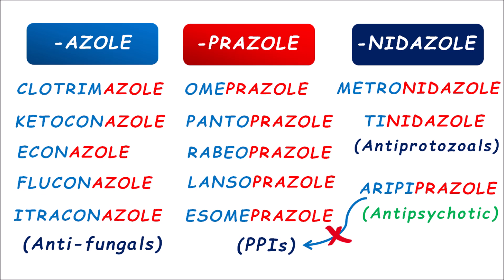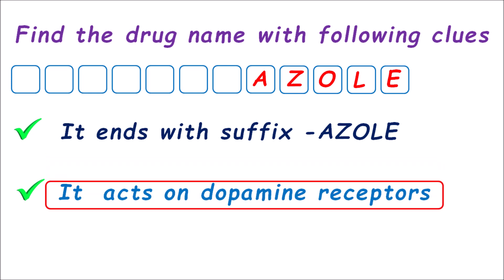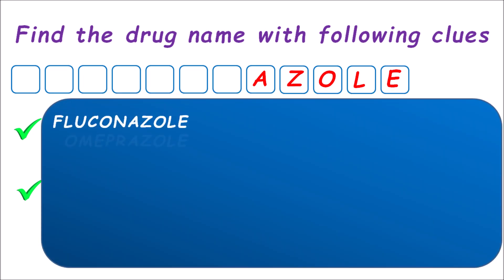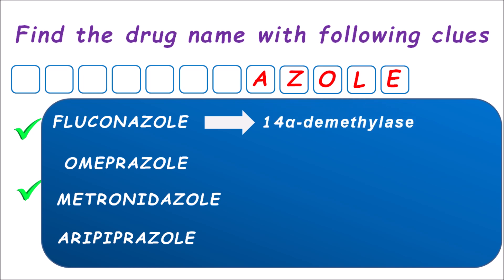Now with this information let us solve the puzzle. The second clue: it acts on dopamine receptors. Which drug acts on dopamine receptors? Among fluconazole, omeprazole, metronidazole, and aripiprazole — fluconazole is an antifungal that inhibits lanosterol-14-alpha-demethylase enzyme, thereby inhibiting ergosterol synthesis in the fungal cell membrane. So azole antifungals act on an enzyme, not on the dopamine receptor. Omeprazole and PPIs block the H+/K+ ATPase proton pump, reducing gastric acid secretion — again not acting on dopamine.